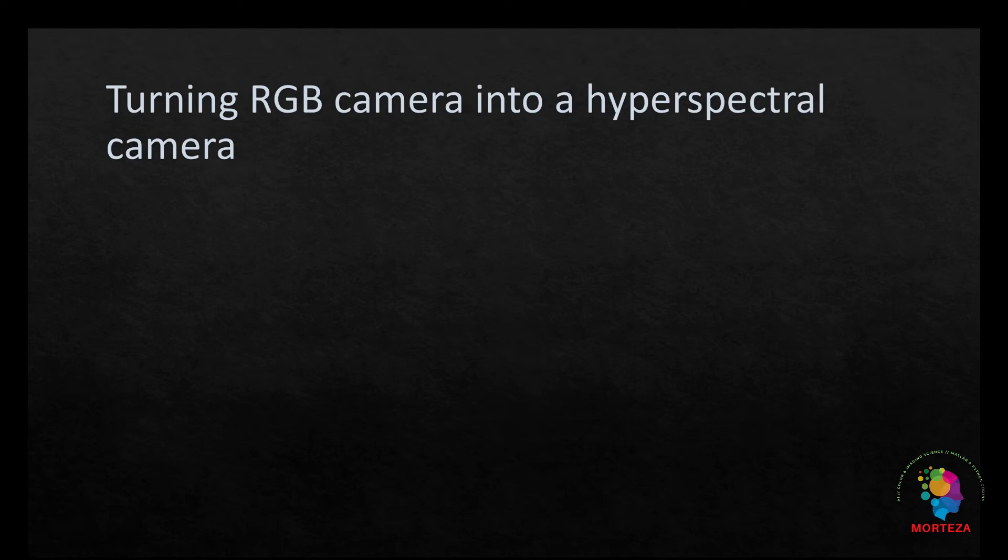Now, let's talk about turning an RGB camera into a hyperspectral camera. Let's say we have all the spectral reflectance information of the color chart in the visible part of the spectrum in a matrix called R, whose size is 24 by 31, where 24 stands for the patches of Macbeth color checker, and 31 refers to the spectral reflectance data from 400 to 700 nanometer at 10 nanometer interval.